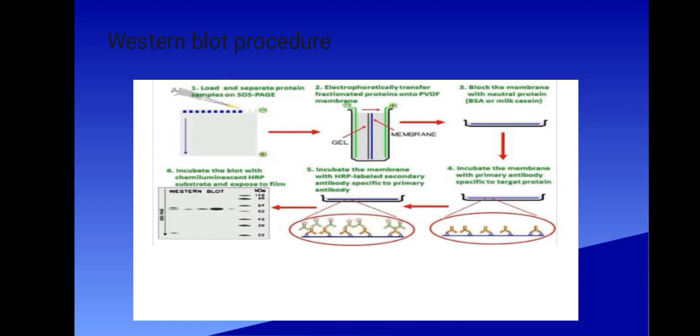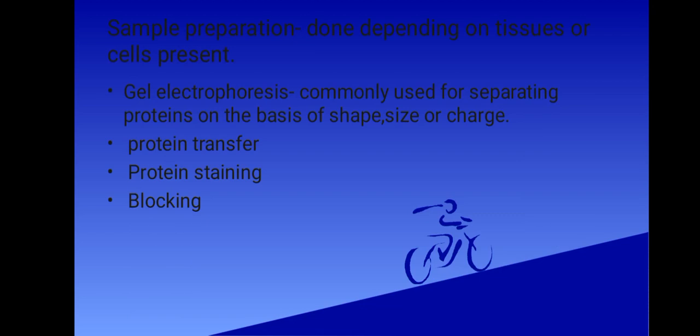In number six, we incubate the blot with chemiluminescent HRP substrate and expose to film. Those are the steps of the procedure of Western blotting.